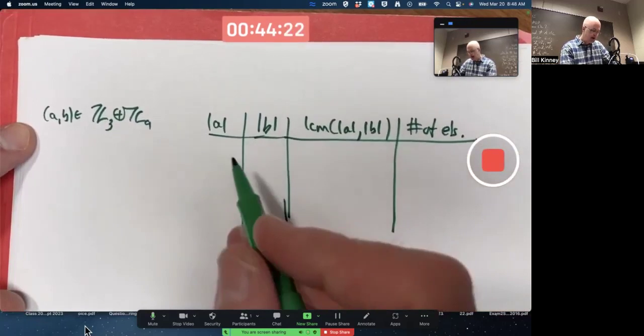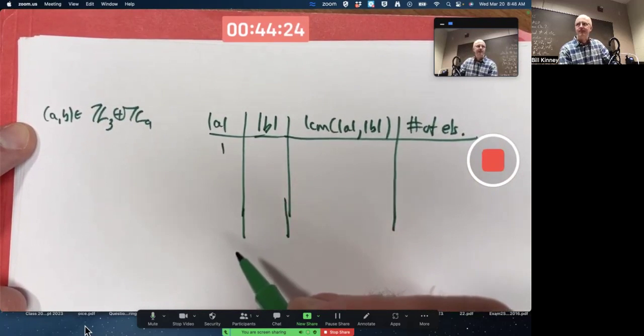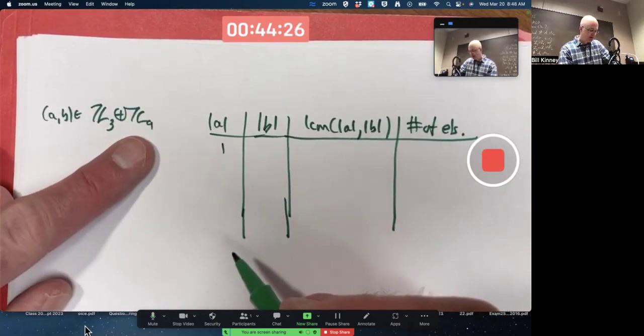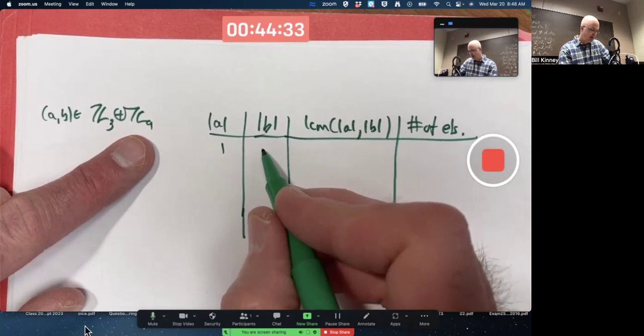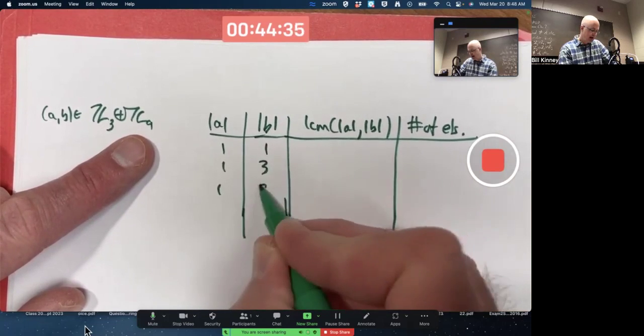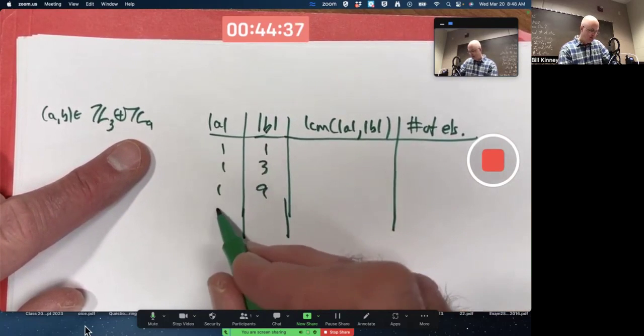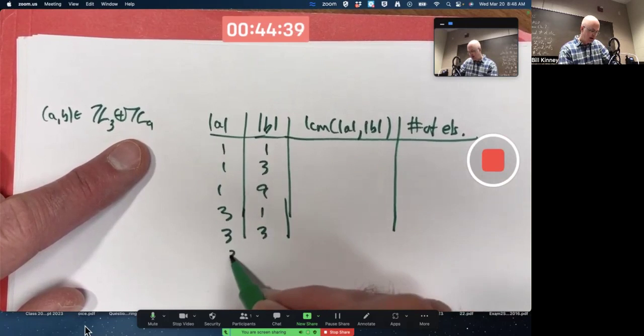What are the possibilities for A, the order of A? One or three. What are the possibilities for the order of B? One, three, or nine. So we could have one, one, one, three, one, nine, three, one, three, three, and three, nine.